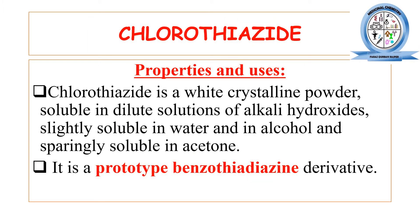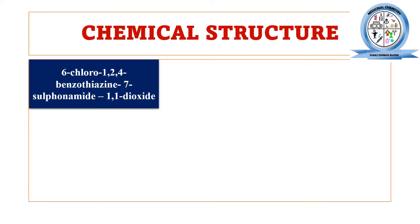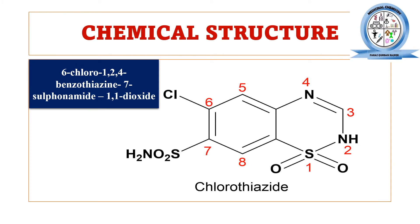Chlorothiazide is one of the thiazide diuretics. Its physical properties: it is a white crystalline powder, soluble in dilute alkali hydroxide solution, slightly soluble in water and alcohol, and sparingly soluble in acetone. It is basically a prototype of the benzothiazide diuretic class. Now let's look at the chemical structure of chlorothiazide.